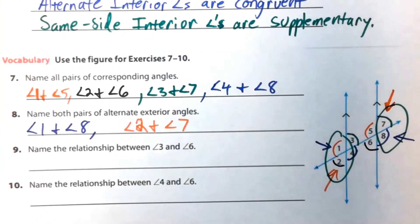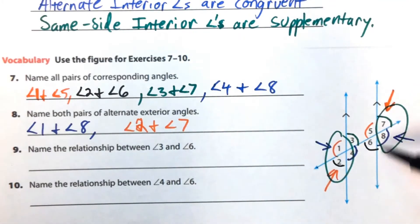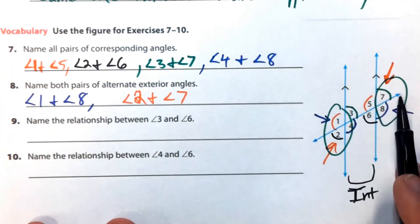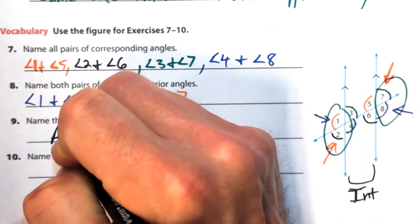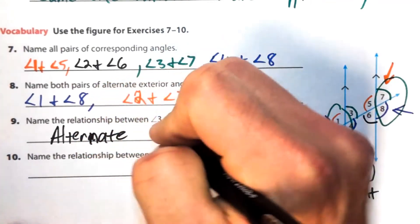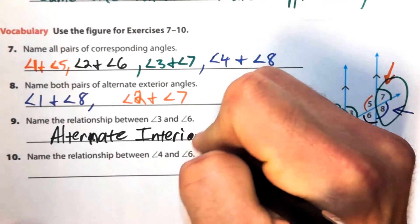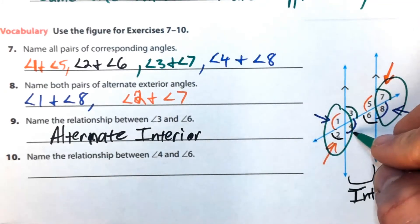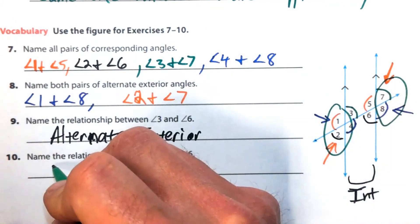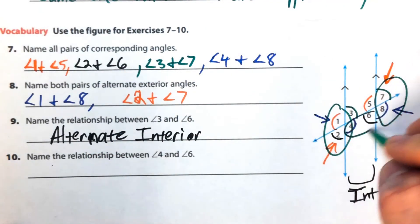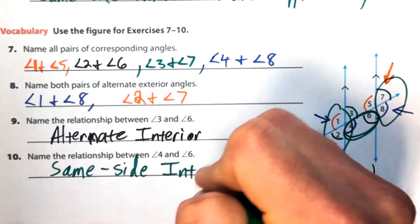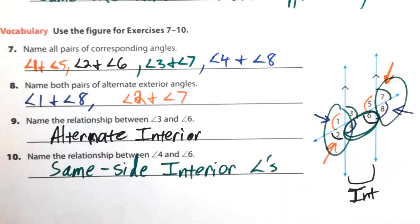Number 9: Name the relationship between angles 3 and 6. They're both inside the parallel lines — interior — and on opposite sides of this transversal, so they are alternate interior angles. Number 10: Name the relationship between angles 4 and 6. Both are on the inside — interior — and they're on the same side of the transversal, making them same-side interior angles, which are supplementary.